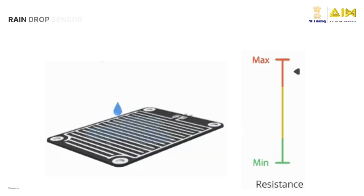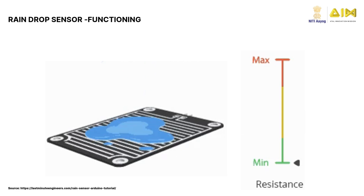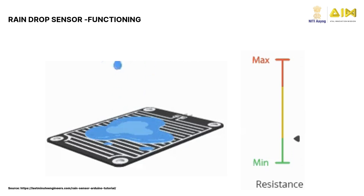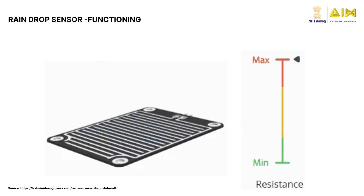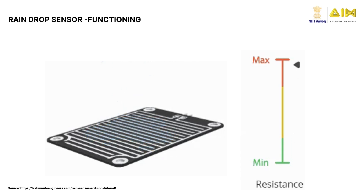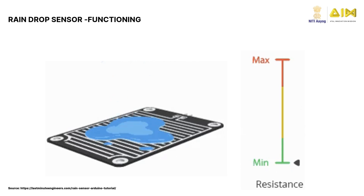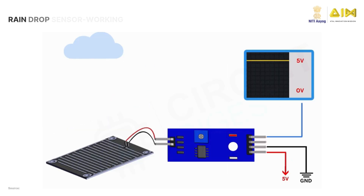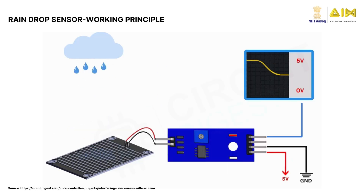The PCB is made out of multiple exposed conductive plates arranged in a grid format. When rain falls on top of the sensor, the resistivity of the conductive plates changes. By measuring the changes in the resistance, we can determine the intensity of the rainfall. The more intense the rainfall, the lower the resistance. This simulation shows the voltage slowly drops from 5 volts to 0 volts when water droplets start falling from the top.